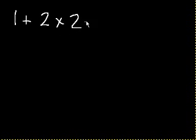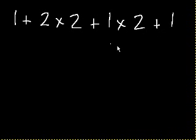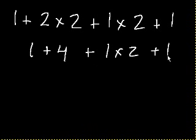Let's say I had 1 plus 2 times 2 plus 1 times 2 plus 1. Once again, it looks kind of complicated, but we'll just break it down with order of operations. We do multiplication first. So let's start with this multiplication right here. 2 times 2. Well that's 4, so we get 1 plus 4 plus 1 times 2 plus 1.